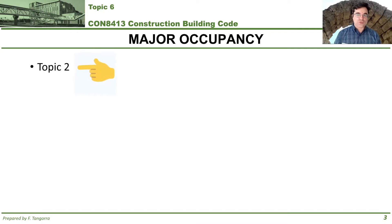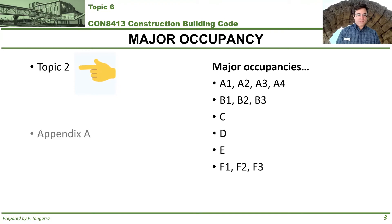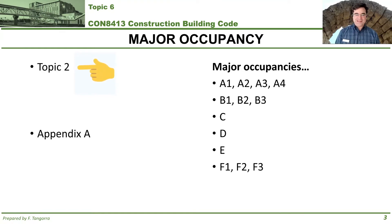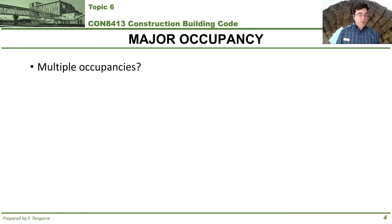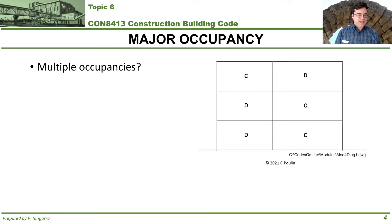Now let's start with the first one: major occupancy. We covered this first under topic two, so I'd recommend you go check out topic two if you want a refresher. The whole point of topic two and major occupancy was to learn how to recognize the occupancy of a building given its description, and we also looked at how Appendix A is your friend when figuring out major occupancy. But the question I'd like to address is: what happens if the building we're analyzing has more than one occupancy — multiple occupancies in the same building?